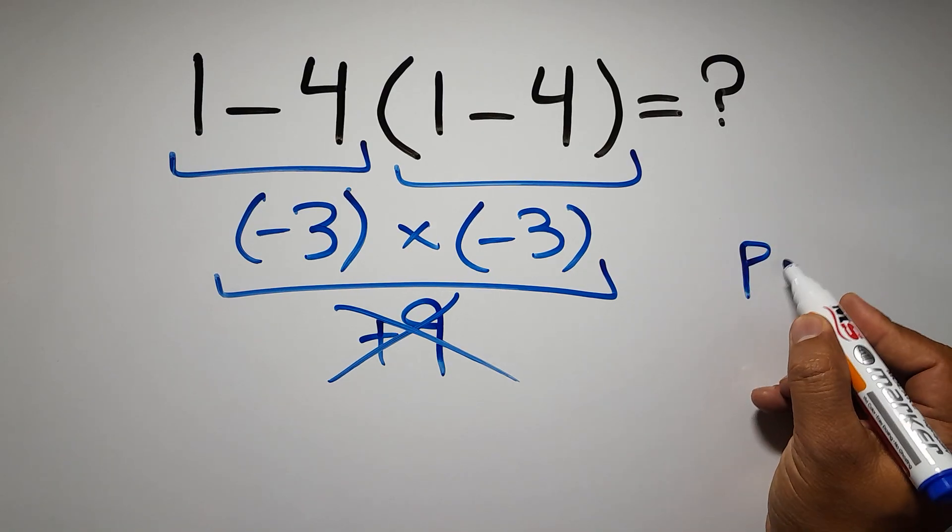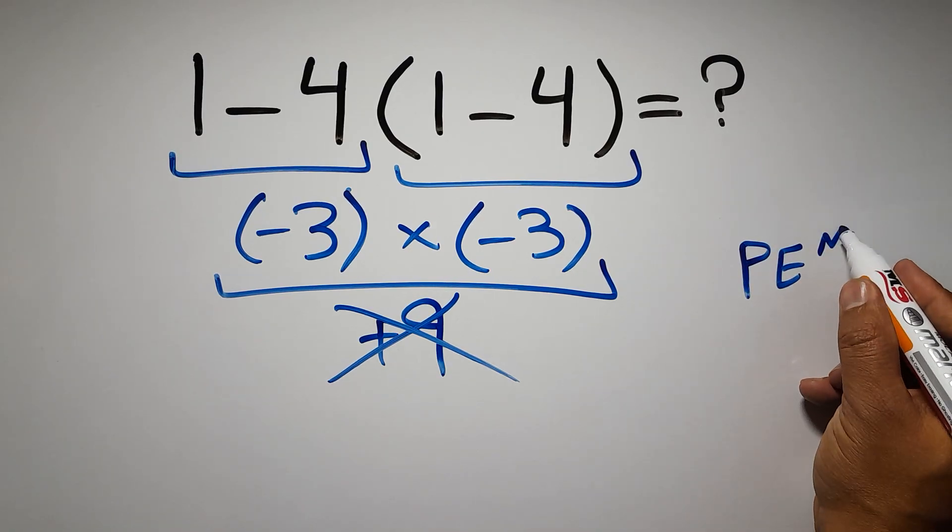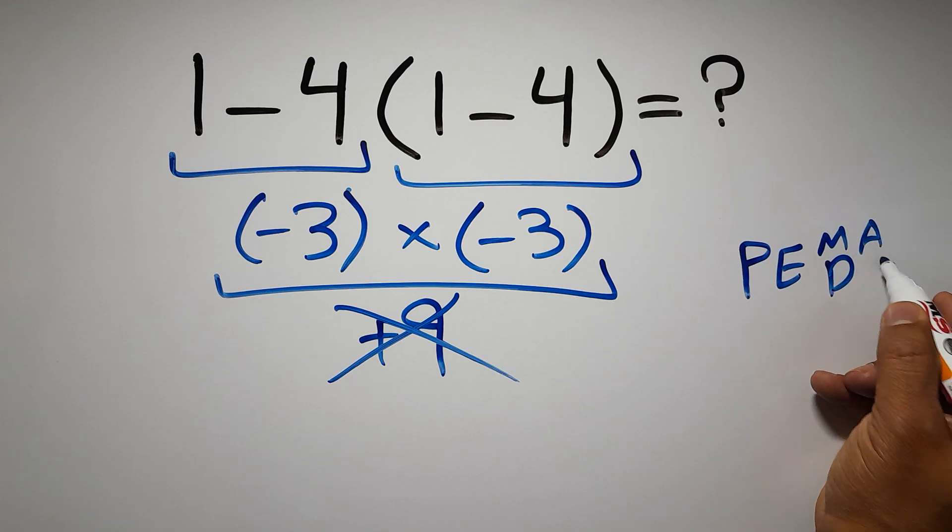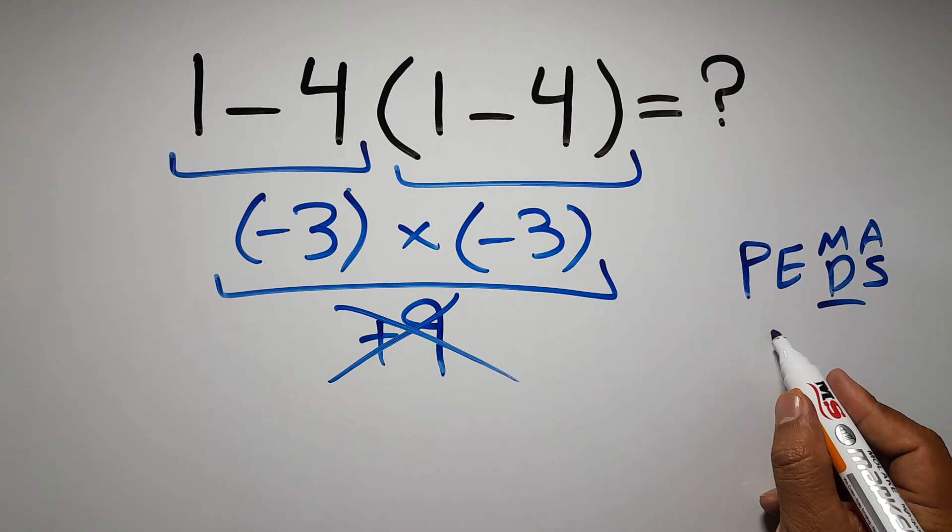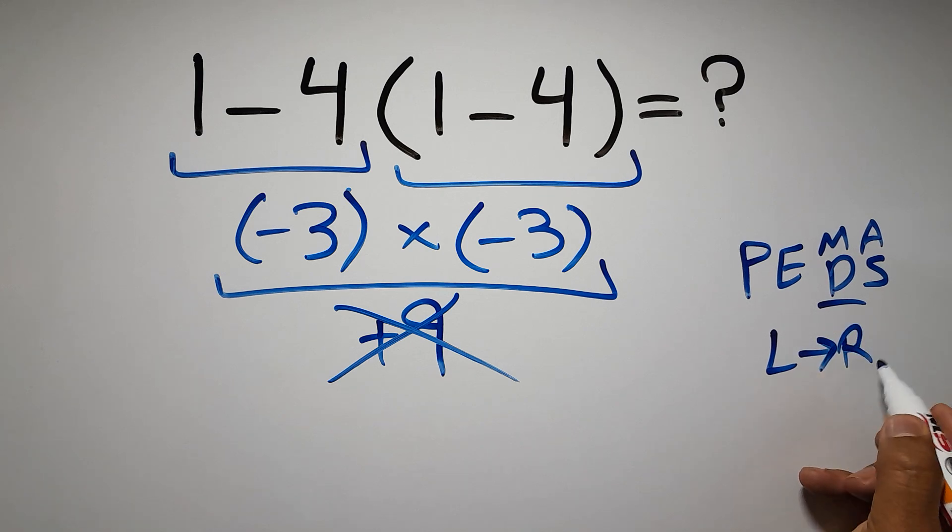First we have to do parentheses, then exponents, then multiplication or division, and finally addition or subtraction. Remember that multiplication and division have equal priority and we have to work from left to right, and the same applies to addition and subtraction.